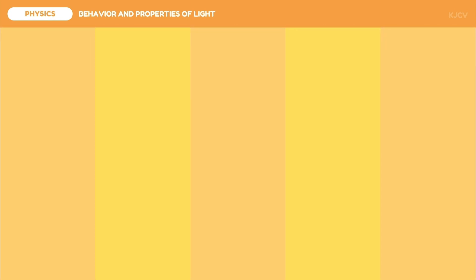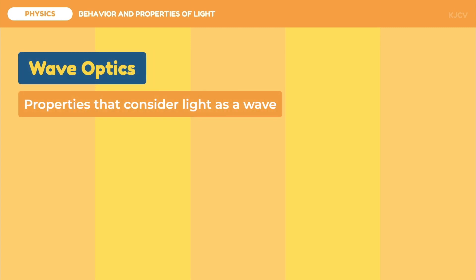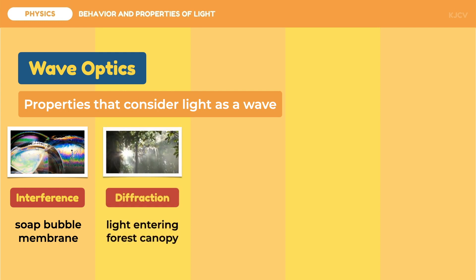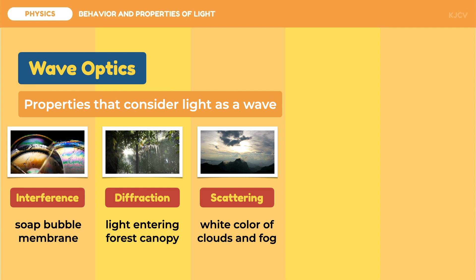In summary, some properties of light can be explained by the wave theory and not the particle theory. This is what we call wave optics. This includes interference on soap bubble membranes, diffraction on forest canopies, scattering of light on white clouds and fog, dispersion on prisms, and polarization of light on polaroid sunglasses.